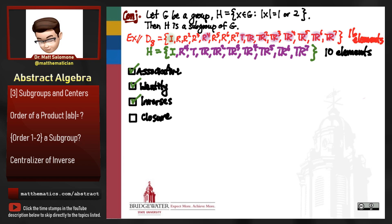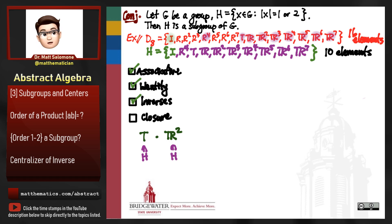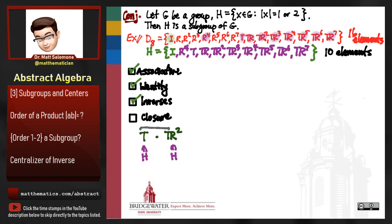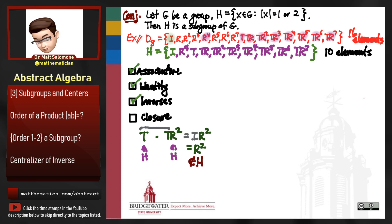If I'm going to find a reason to disbelieve the closure property, it will be because I can combine two different elements and get something outside my subset. Let's try: combine T with TR squared. Each is a reflection and thus in my subset. But using the simplification rules for the dihedral group, T multiplied by T gives the identity, leaving R squared. R squared is not one of the elements in my subset — so the closure property has been violated.